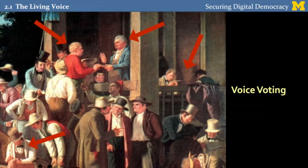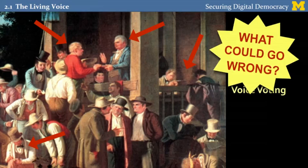But even better, the system allows anyone standing around — any private citizen — to also make an independent record of the vote. So that's another way to check that the votes are being counted accurately. Now that you've seen how the system works, it's time to apply the security mindset and ask: what could go wrong? Think about how someone could try to manipulate this system or could try to cheat. And we'll talk about some possible ways when we come back.